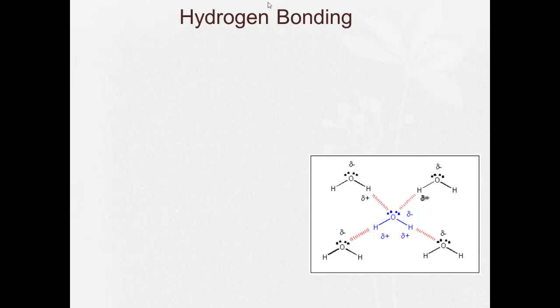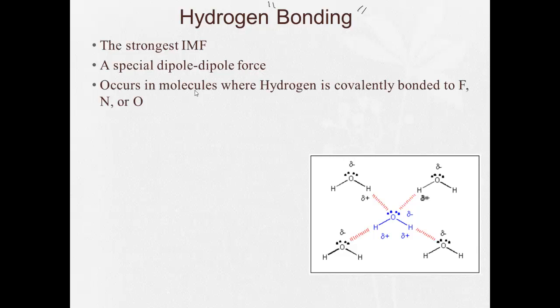So first, let's take a look at hydrogen bonding. It is the strongest of the intermolecular forces. Remember, they're all relatively weak, but this is the strongest of them. And really, it's a special dipole-dipole force. This occurs in molecules where hydrogen is covalently bonded, usually to fluorine, nitrogen, or oxygen. And the hydrogen, since it's a positive end, is attracted to this lone pair of electrons. So since this lone pair of electrons is negative and the hydrogen is a positive dipole, just like magnets, they're attracted to one another. So it's not strong like a covalent bond, but of intermolecular forces, it's the strongest kind.